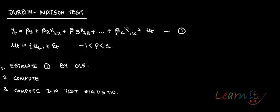Durbin-Watson test. This test will test for whether there is a first order serial correlation present in your data or not. Suppose you have the model: yₜ = β₁ + β₂x_{t2} + ... + βₖx_{tk} + uₜ, where uₜ follows ρ·u_{t-1} + εₜ — that is your first order autocorrelation.